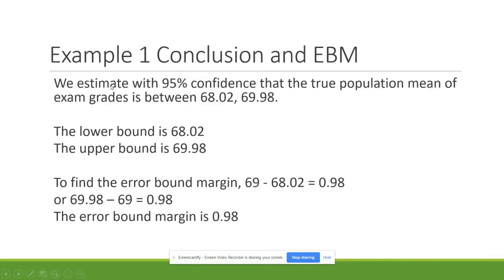I can estimate with 95% confidence that the true population mean of exam grades is between 68.02 and 69.98. My lower bound is 68.02, and my upper bound is 69.98.